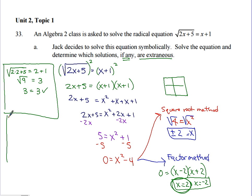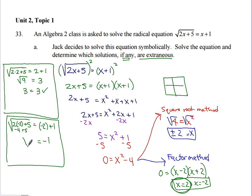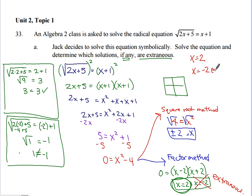Now checking x equals negative 2: square root of (2 times negative 2 plus 5) equals negative 2 plus 1. The right side gives negative 1. The left side: negative 4 plus 5 is 1, and square root of 1 is 1. So 1 equals negative 1 — that's not true. Therefore x equals negative 2 is an extraneous solution. x equals 2 is the solution.